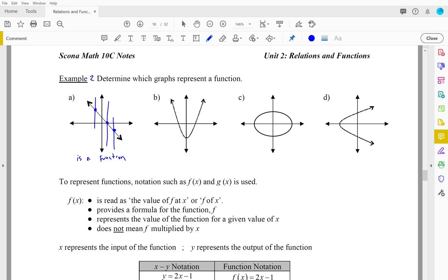So the next graph is a parabola. Using our vertical line test, drawing vertical lines anywhere on this graph will only ever hit the graph in one spot. So this is a function also.